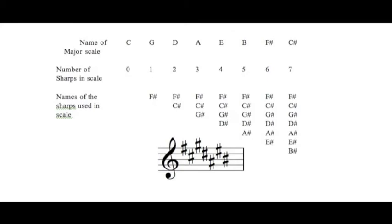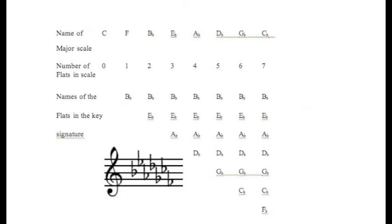And C sharp major has F, C, G, D, A, E, and B. You may notice that the first sharp is always F, the second is always C, third is always G, fourth is always D, fifth is always A, sixth is always E, and the seventh is always B.